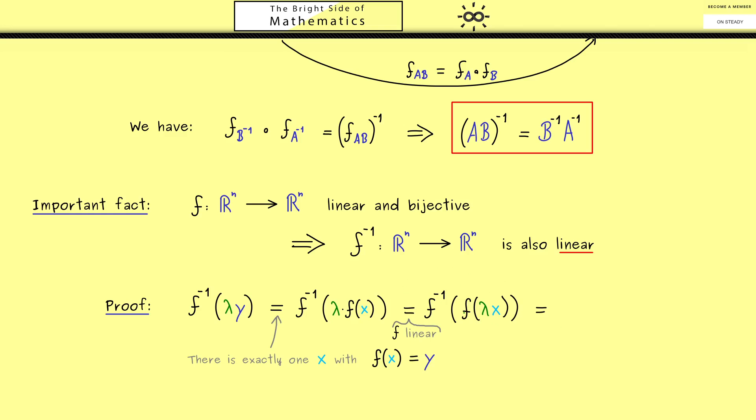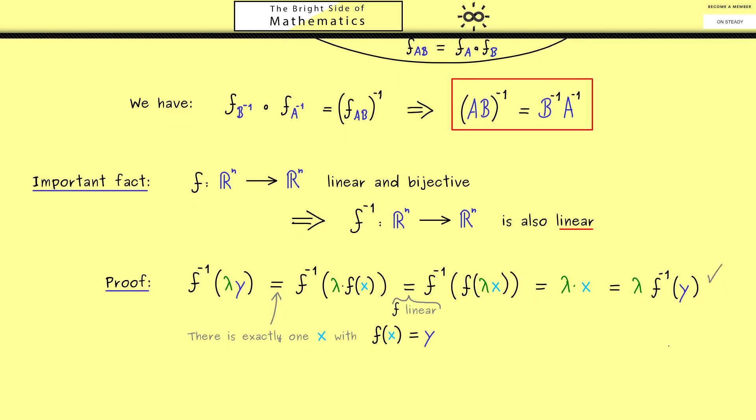They are inverses of each other, so what remains is lambda times x. And now if you remember that x is simply F inverse of y, we are finished. Because you see, then we have lambda times F inverse of y. So if you read it from left to right, you see we simply have pulled out the scalar factor lambda. So in conclusion, the scalar multiplication is finished.